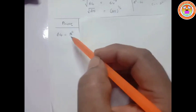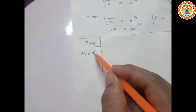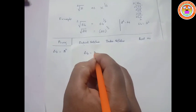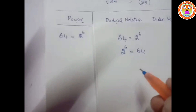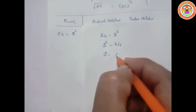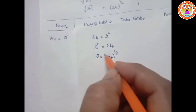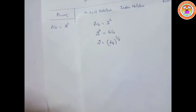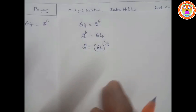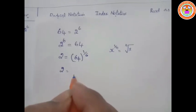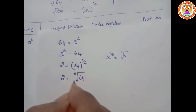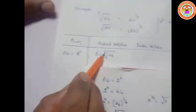In power notation, 64 equals 2 to the power of 6. For radical notation, since 2 to the power of 6 equals 64, then 2 equals 64 to the whole power of 1 by 6. Since x to the power of 1 by n equals the nth root of x, we get 2 equals the 6th root of 64. This is the radical notation.